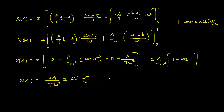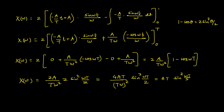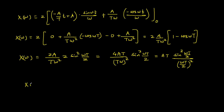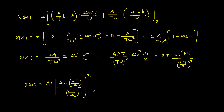Rearranging, x(ω) = A·T · [sin(ωT/2)/(ωT/2)]². This can be written as A·T·sinc²(ωT/2), which is the Fourier transform of the triangular pulse.